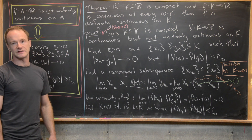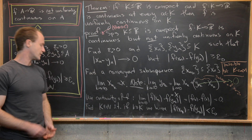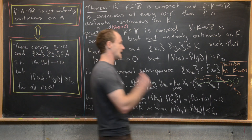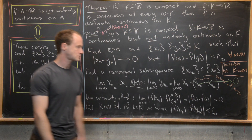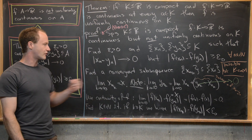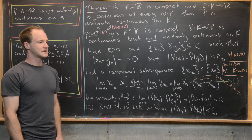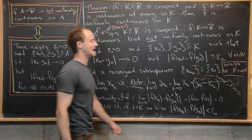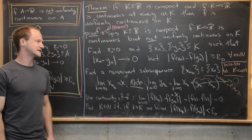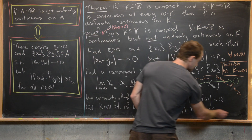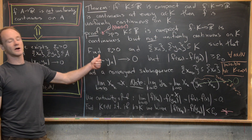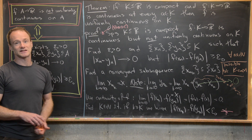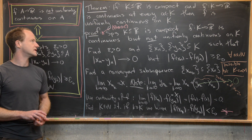Now let's see how we've created a contradiction. We assumed f was not uniformly continuous, which gave us sequences where x_n minus y_n goes to zero but the absolute value of f(x_n) minus f(y_n) is always greater than or equal to epsilon_0 for all n. But using compactness we got a convergent subsequence, and using the continuity of f we found a point where that term is strictly less than epsilon_0. A value cannot simultaneously be greater than or equal to epsilon_0 and less than epsilon_0, so we have a contradiction. The only assumption we made was 'not uniformly continuous,' so that assumption was in error — and therefore f is uniformly continuous on K.